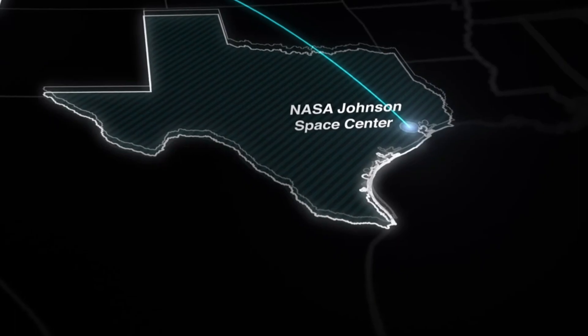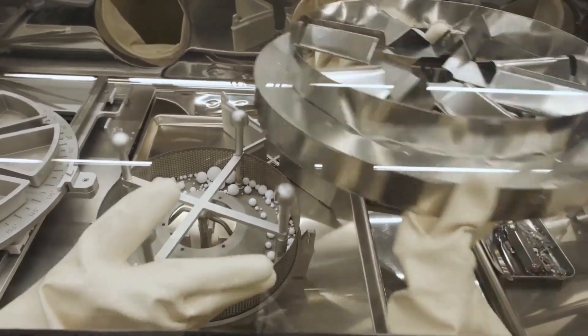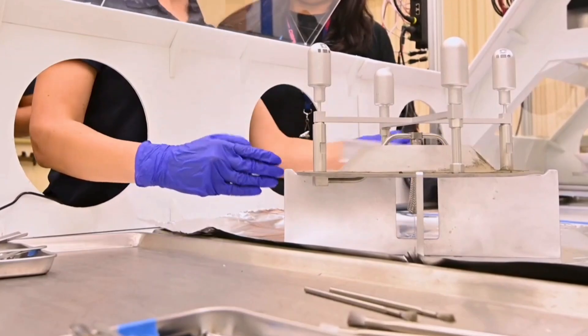NASA's Johnson Space Center will distribute parts of the Bennu sample to researchers worldwide. They will use all their complex machines and resources together in order to achieve the final goal.